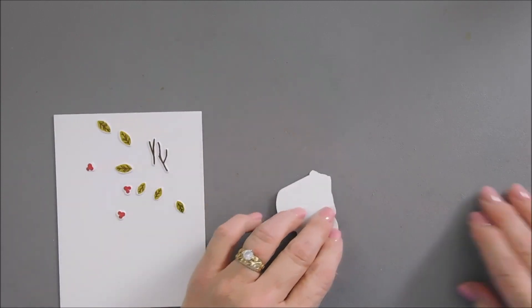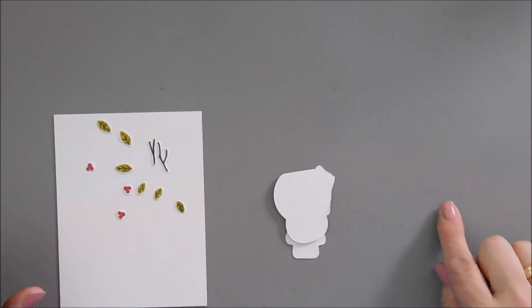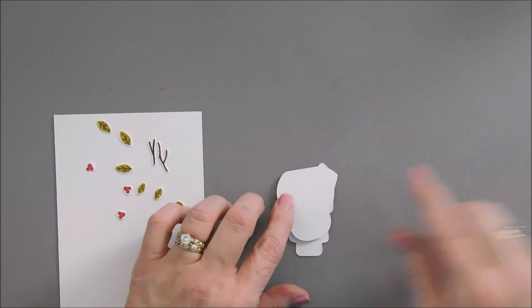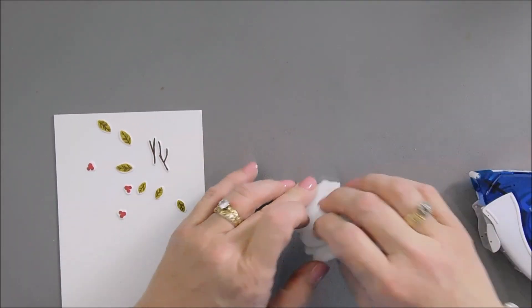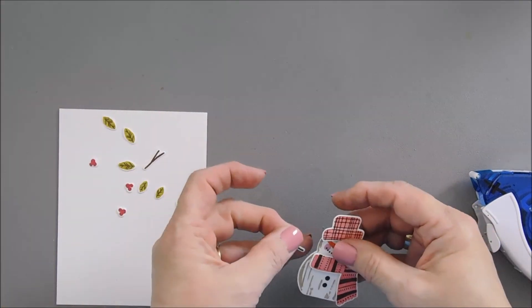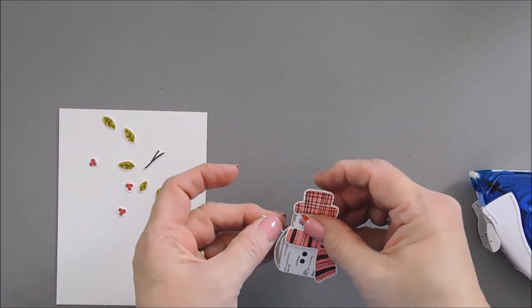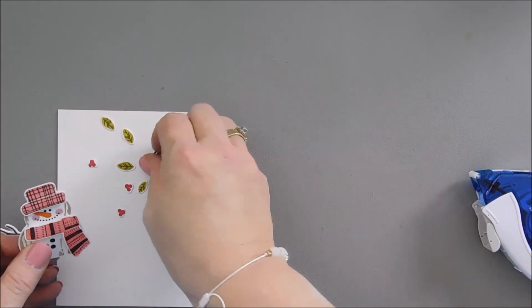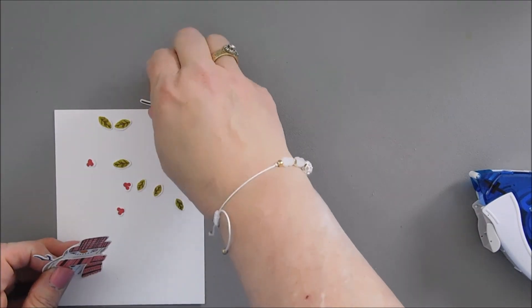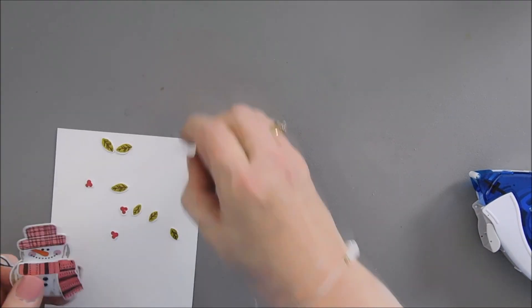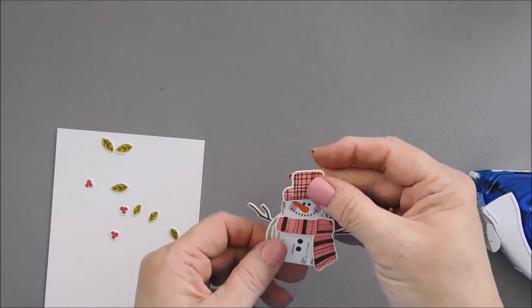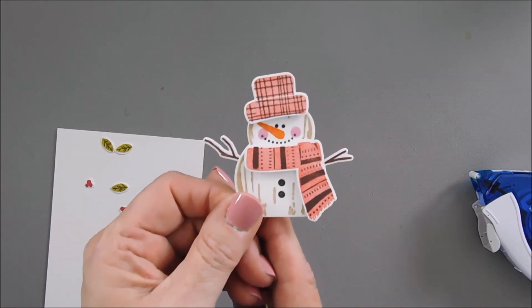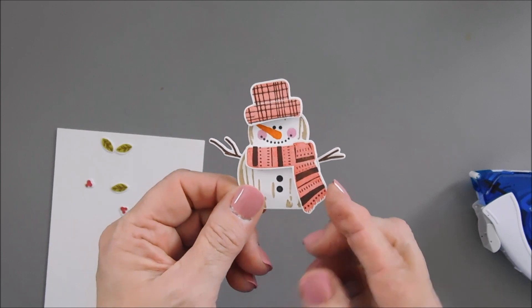We have our snowman arms. I'm going to use my tape runner and we're going to add adhesive to the left and to the right. Then we can tack down our snowman. You can put these snowman arms anywhere you'd like. There's two different kinds, you can use two of the same. And our snowman is good to go. He's so cute.